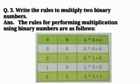Now the third question is write the rules to multiply 2 binary numbers. Answer is the rules for performing multiplication using binary numbers are as follows. We will make this table and 0 multiplied by 0 equals to 0, 0 multiplied by 1 equals to 0, 1 multiplied by 0 equals to 0 and 1 multiplied by 1 equals to 1. So you have to make this table in the same way as it is shown in the picture.